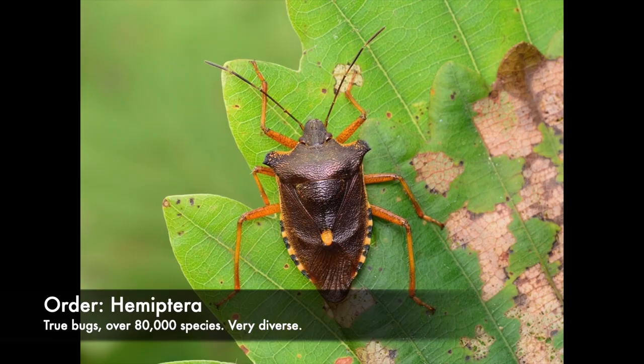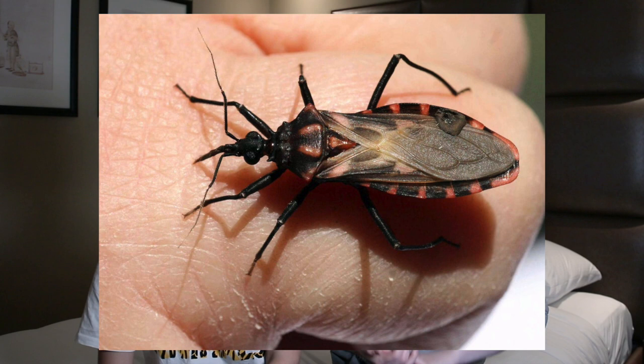The next order is Hemiptera — the true bugs — the ones I mentioned at the beginning. The specific bug we're talking about is the kissing bug, found in Asia, Africa, Australia, and parts of America. They're part of the subfamily Triatominae and are potential vectors for Chagas disease. One of the hosts actually got bitten by a kissing bug and had a scare — kissing bugs poop as they eat, and the parasite is found in the poop, making it easy to enter wounds on your face. Nature is beautiful.